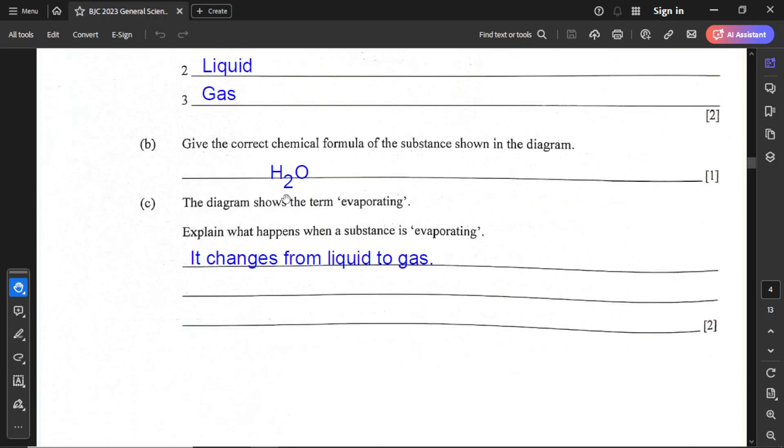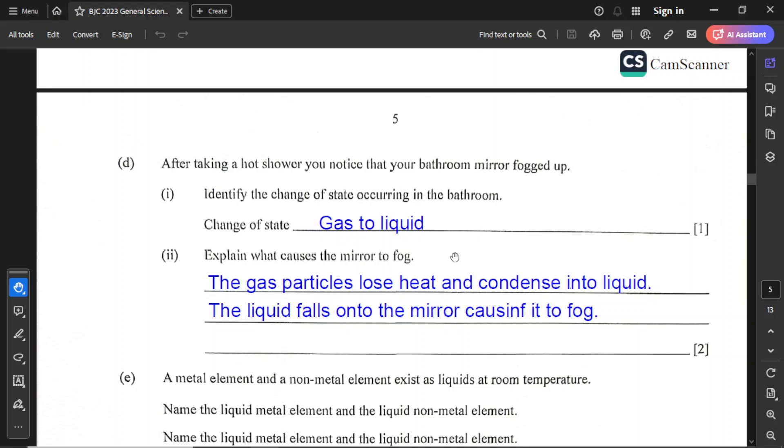For part C, the diagram shows the term evaporating. Explain what happens when a substance is evaporating. The substance is changing from liquid to gas. For part D, after taking a hot shower, you notice that your bathroom mirror fogged up. Identify the change of state occurring in the bathroom, and the change here is gas to liquid. Explain what causes the mirror to fog. Simply because the gas particles lose heat from the water vapor and condense into liquid. The liquid falls onto the mirror causing it to fog.